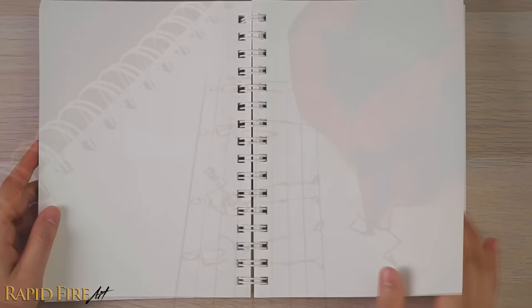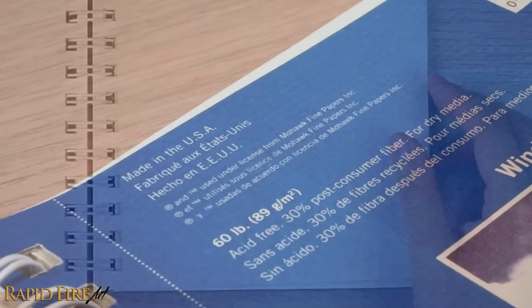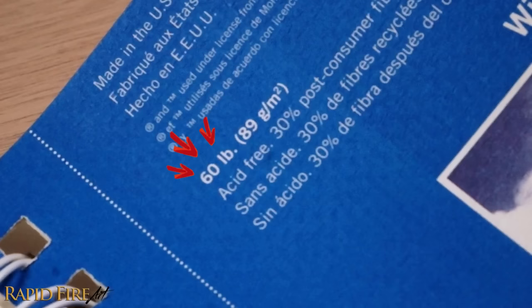Now, I'd recommend choosing a sketchbook with thick sheets for durability purposes. If you're buying one online, you can tell how thick the sheets are by looking at the weight indicated on the cover. I recommend something around 50 to 60 pounds.